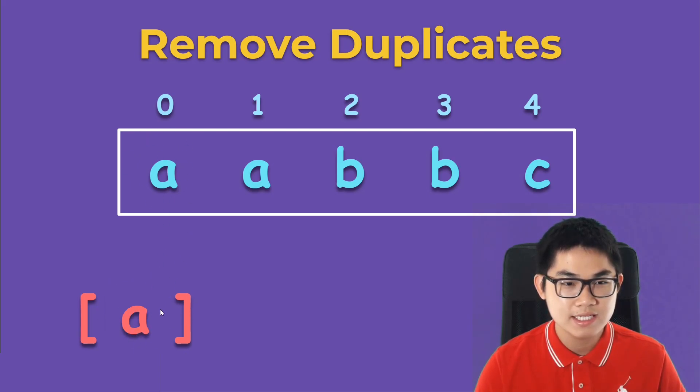So we add it into the list. And now we start at the second element. We look at the element to its left. Is it the same letter? Yes, it is. So we don't do anything here, we just move on to the next element. And then we look at the left. Is it the same letter? No, it is not. So we add B into the list.